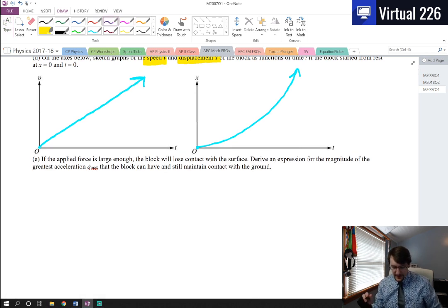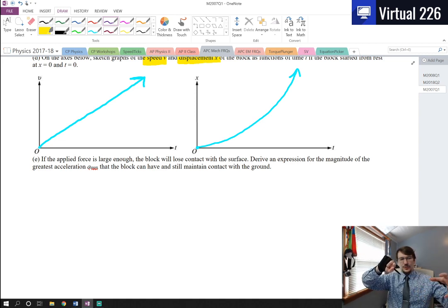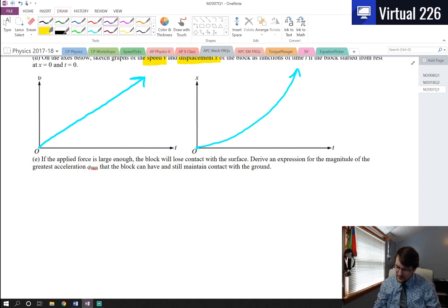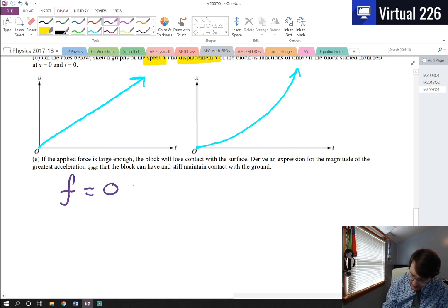And for our last step here, we're asked if the applied force is large enough, the block is going to lose contact with the surface. And that's going to happen because the block's being pulled up as it's being pulled over. And if you pull it up enough, you're going to lift that block off the edge there. We'd like to derive an expression for the magnitude of the greatest acceleration the block can have and still maintain contact with the ground. So this is kind of an interesting little point here. There's a lot of math that goes into the last step, but not a ton of points. What we're looking to do here is if you're able to lift that block off of the surface, you no longer have a normal force pushing back on you. There's still a weight pulling down, but there's no more normal force. And if there's no normal force, that means the friction is zero. So the big thing here is that the friction equals zero, and this is due to the normal equaling zero as well.